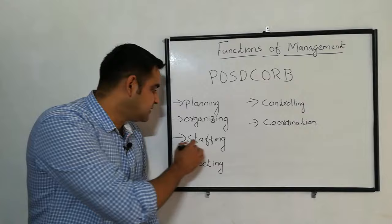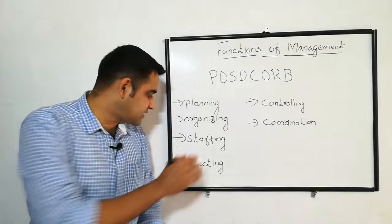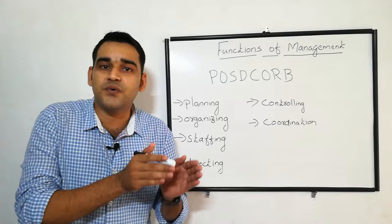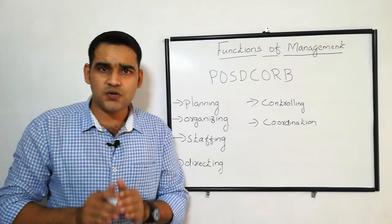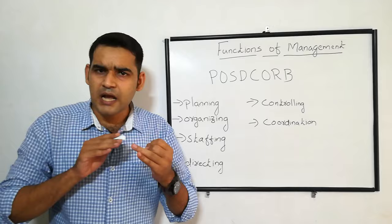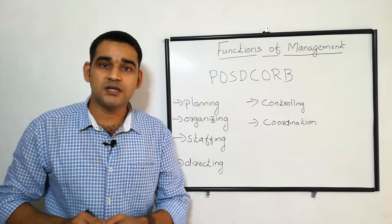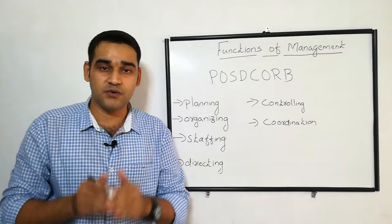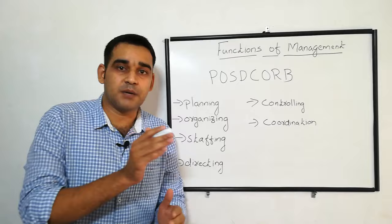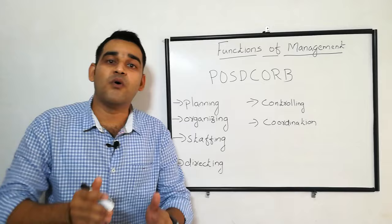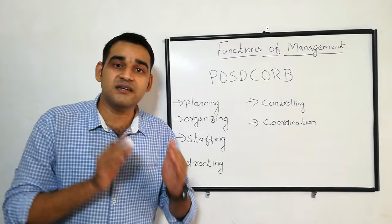Next is directing. Directing means giving instructions to your subordinates — the persons working under you. The things happening in directing are supervision, communication, motivation, and leadership. You supervise and observe the work of subordinates, checking whether they are working according to the policies of the organization. You communicate with them, exchange ideas, give instructions, motivate and reinforce them, and lead them. That is the function of directing.